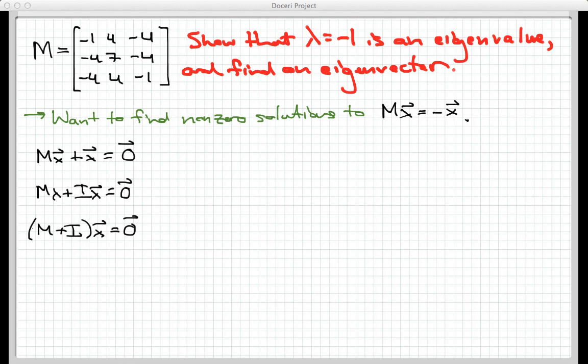To do that, like any homogeneous equation, I'm going to look at the coefficient matrix. That's M plus I, so let's write this down and figure out what that is. M, as you can see up above, is negative 1, 4, minus 4, negative 4, 7, minus 4, and negative 4, 4, negative 1.